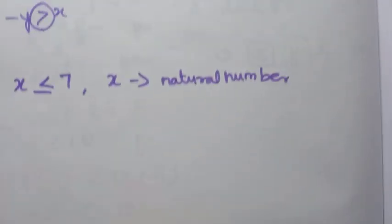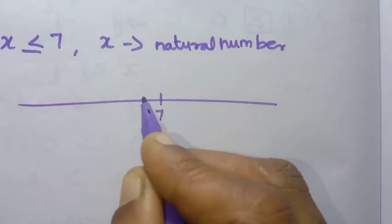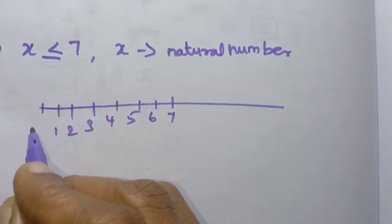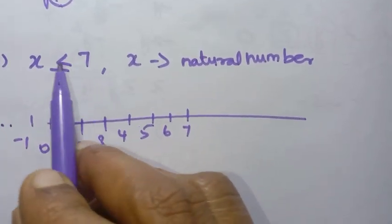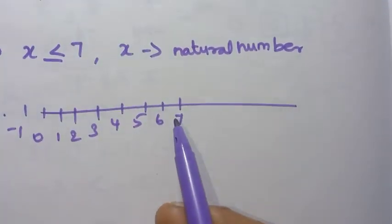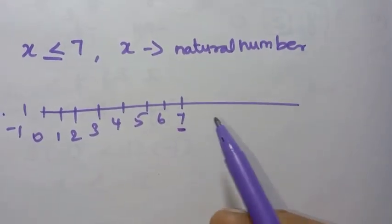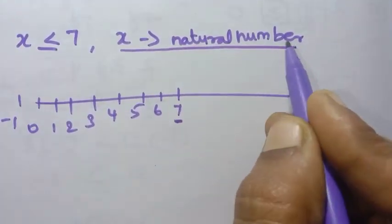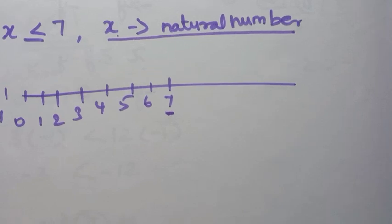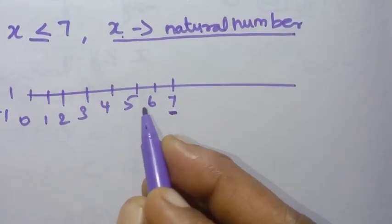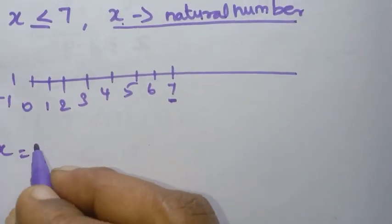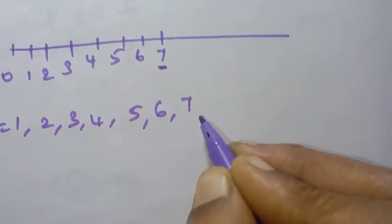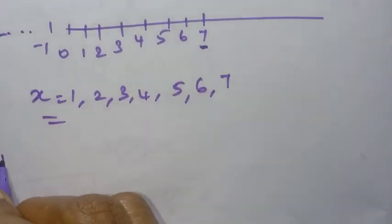Next question: x is a natural number and x less than or equal to 7. On the number line, values from 1 up to 7 satisfy the condition since x must be a natural number. So the solutions are 1, 2, 3, 4, 5, 6, 7.